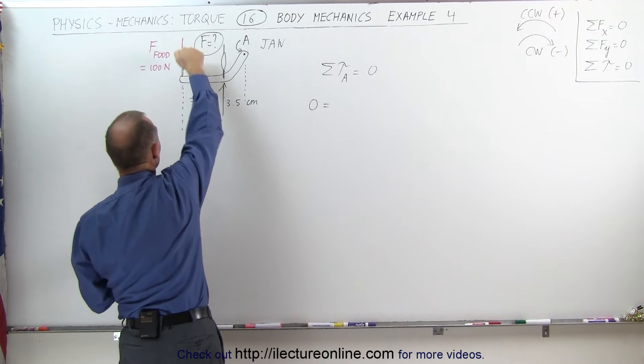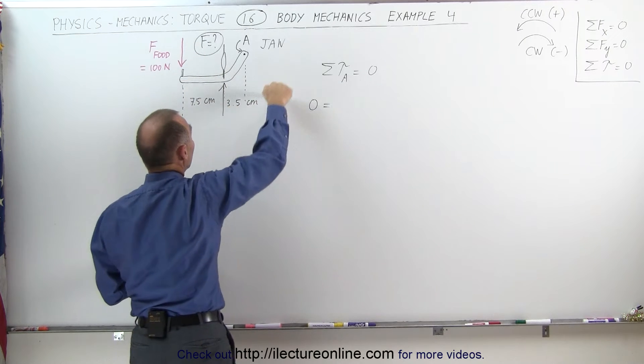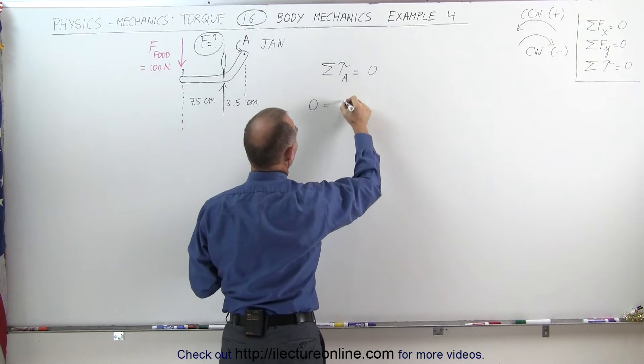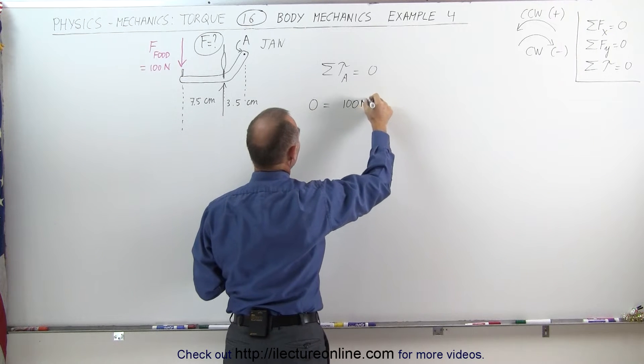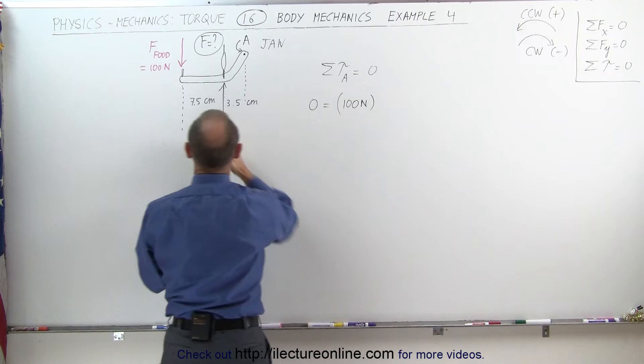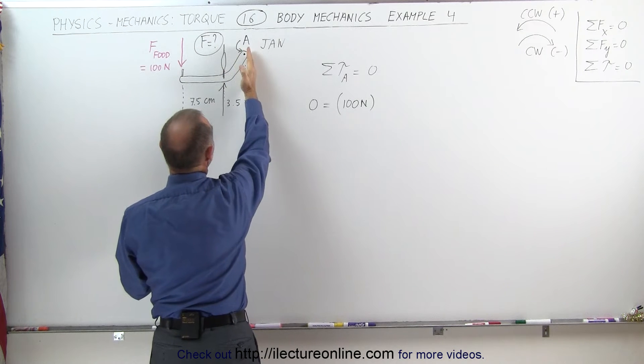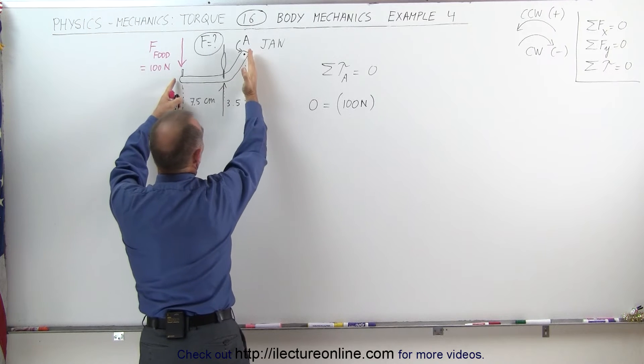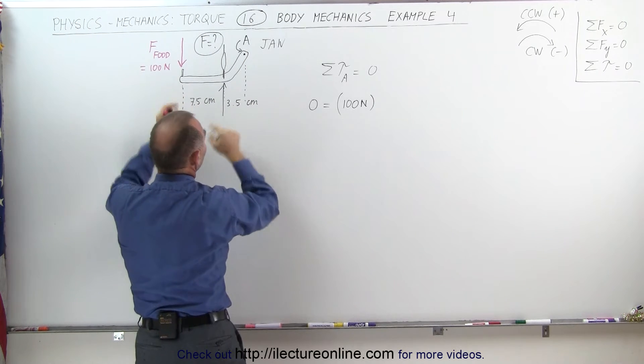now the food here is pushing against the jawbone in a counterclockwise direction, that is a positive torque, that would be plus 100 newtons times the distance from where the force acts to where the hinge is, and that would be the perpendicular distance from the line of action to this right here, that's a total of 11 centimeters.